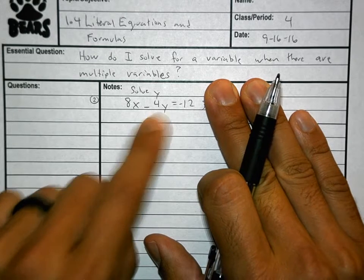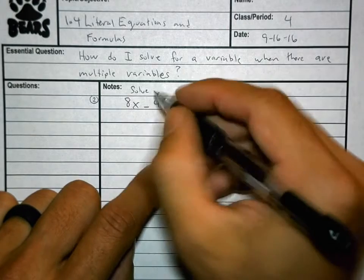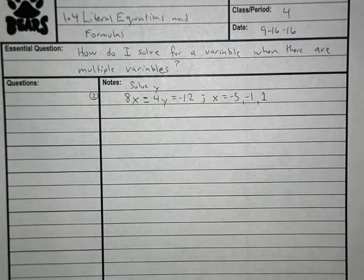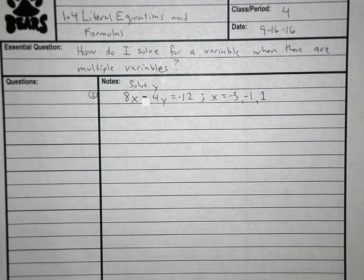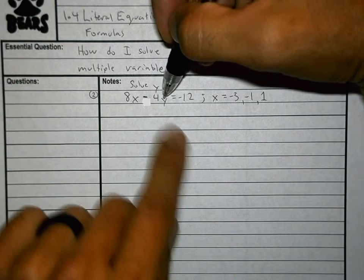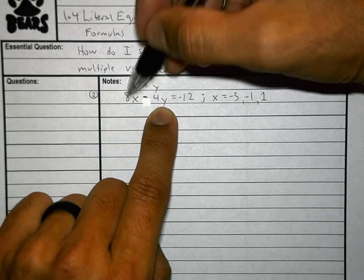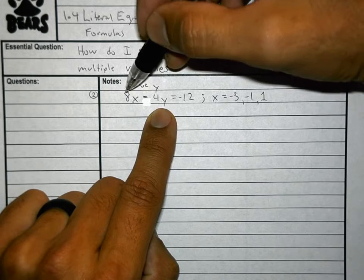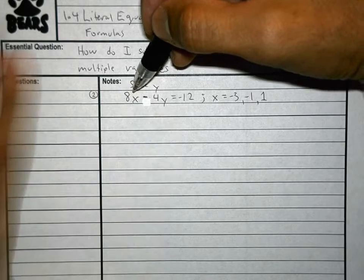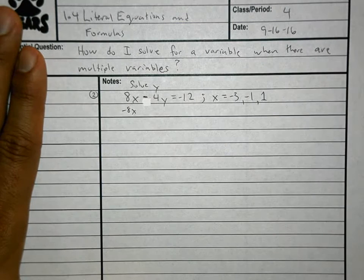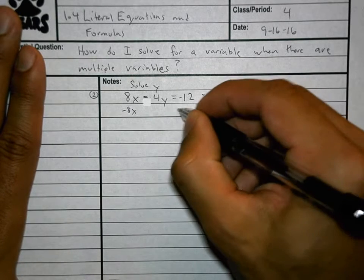If I want to get the y by itself — this is 8x minus 4y — I need to get rid of this 8x. The y has a partner of this negative 4. So what I need to get rid of first is this 8x. Because I want to get rid of a positive 8x, the only way to do that is to have a negative 8x over here. Positives and negatives together are the only way to make something equal to 0. Whatever I do to one side, I do to the other.